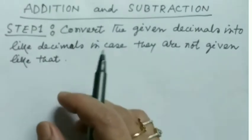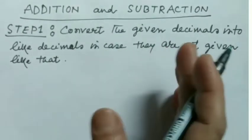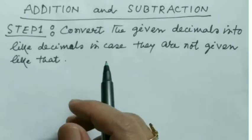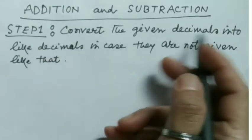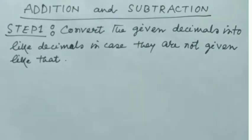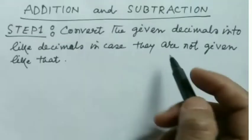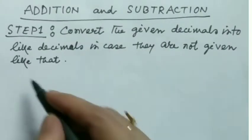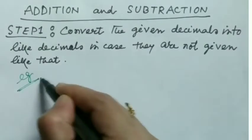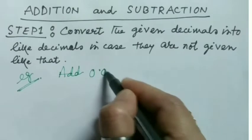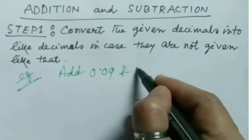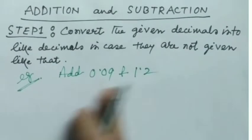Let's understand addition and subtraction step by step. Step number one: convert the given decimals into like decimals in case they are not given like that. For example, I'm taking add 0.09 and 1.2.